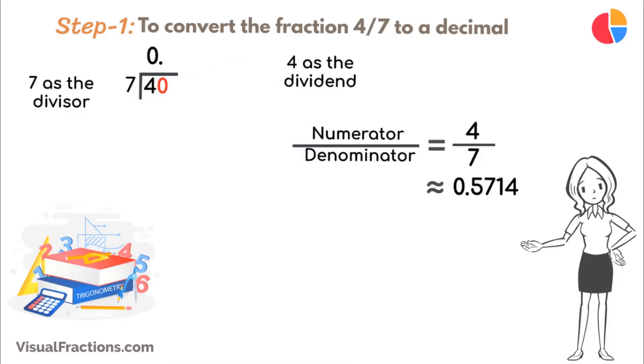7 goes into 40 five times, putting 0.5 in our quotient. Multiply 7 by 5 to get 35, and subtract this from 40, leaving a remainder of 5.